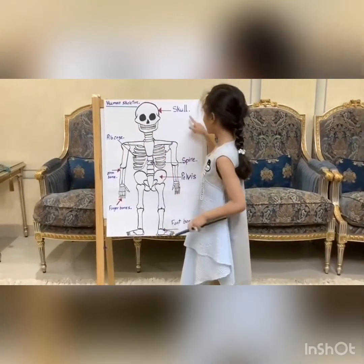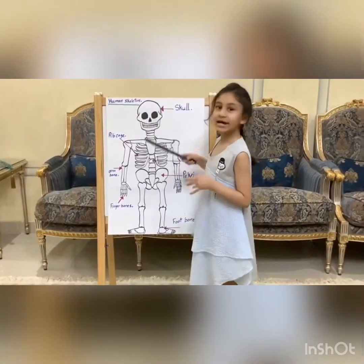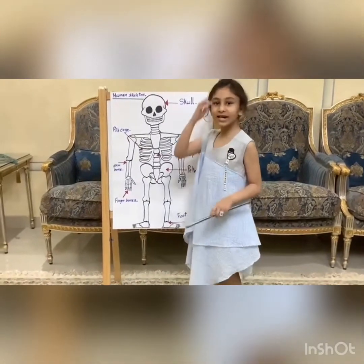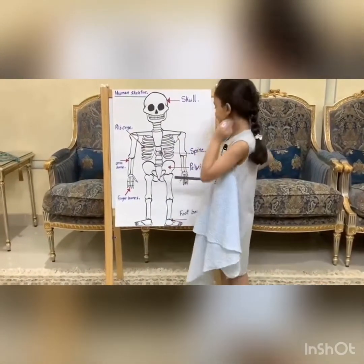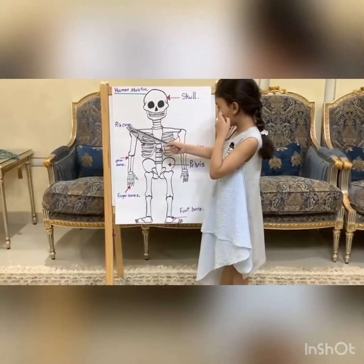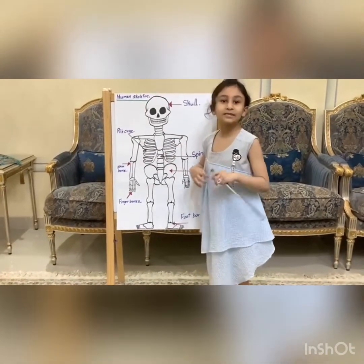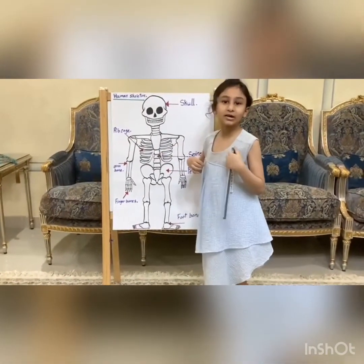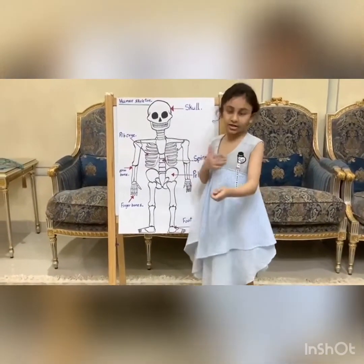This is the skull. It helps us protect our brains. This is the rib cage. It helps us protect our heart and our lungs.